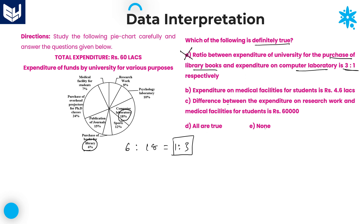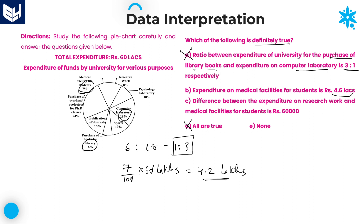Since option A is wrong, option D ('all are true') is also eliminated. Now look at option B: expenditure on medical facilities for students. Medical facility is 7% of 60 lakhs. 7 × 6 = 42, divided by 10 = 4.2 lakhs. But option B states 4.6 lakhs — so option B is also wrong.